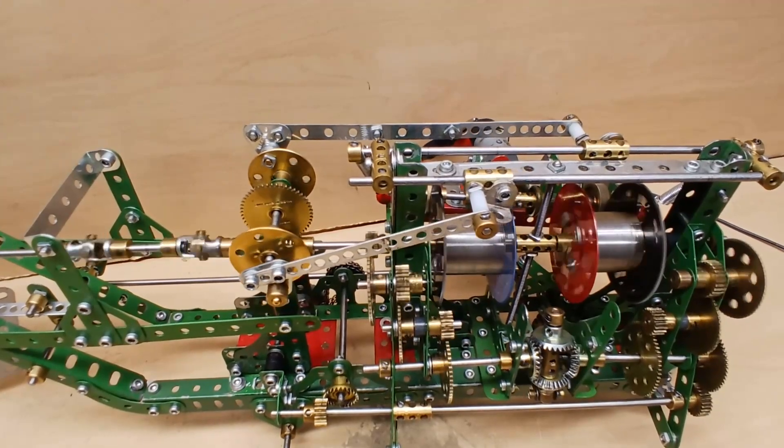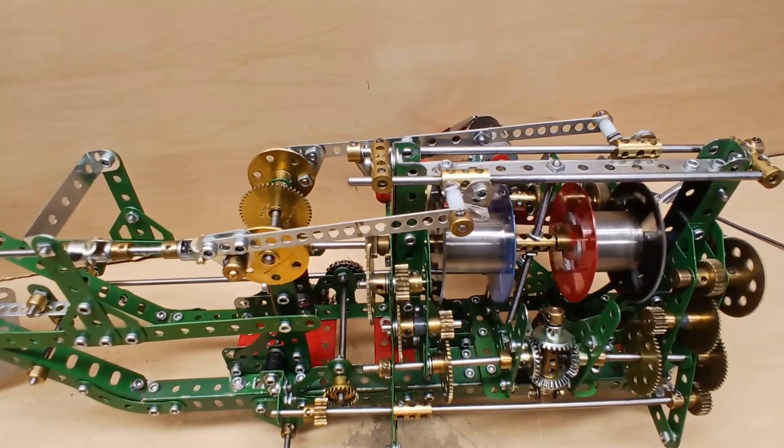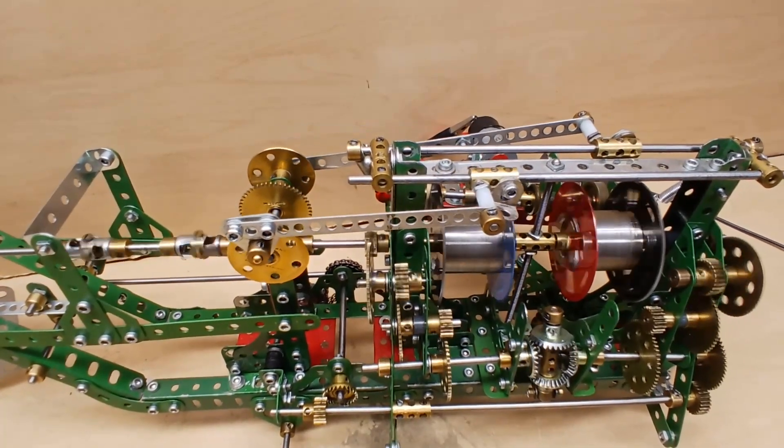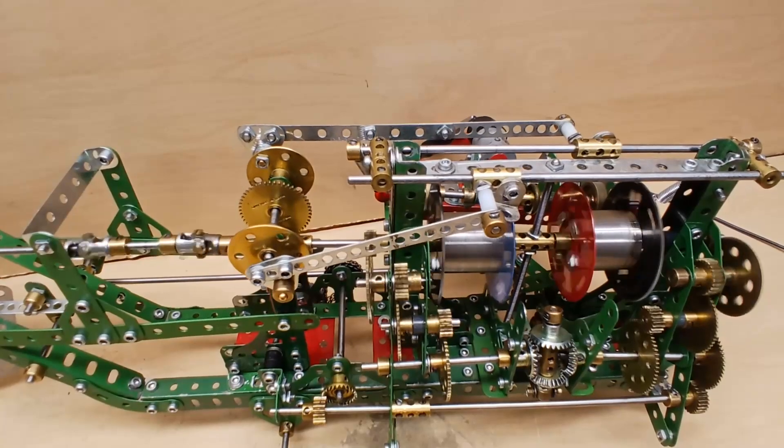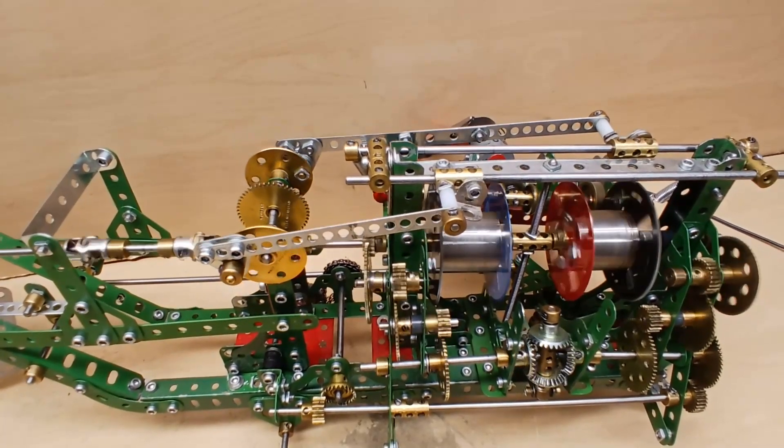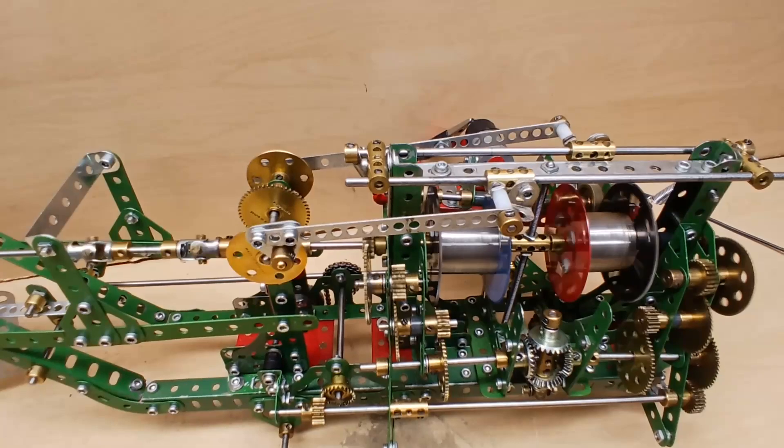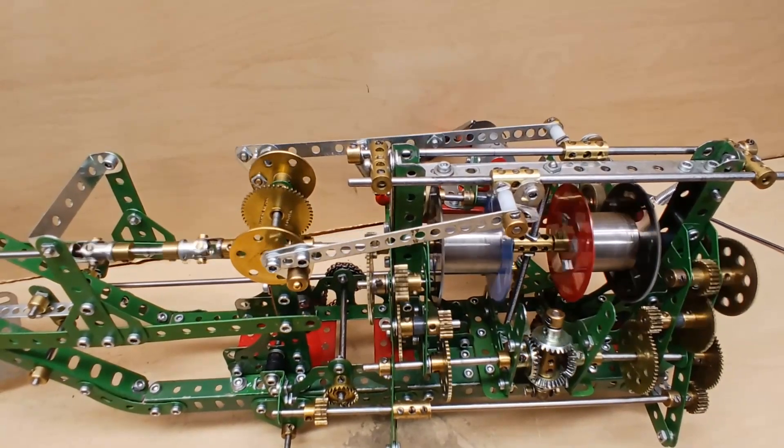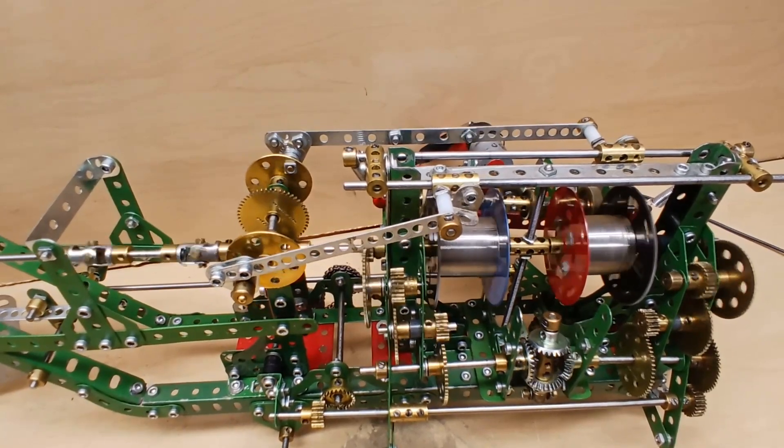When the wires are being wound onto the drums, this mechanism winds the wire evenly across the drums. When the torpedo is actually in operation, this isn't needed, and so it's disconnected to save energy.